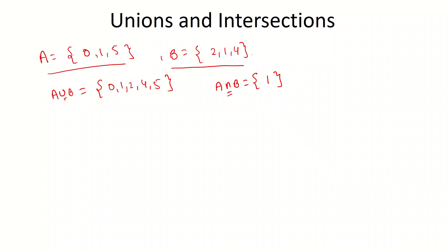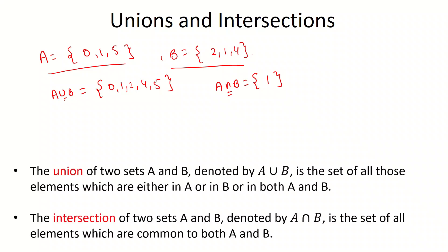Remember, for the union of two or more sets, you take all elements and write them down just once — no repetition is allowed in sets. Make sure you're not leaving out any element. For intersection of two or more sets, list only the elements common to all of those sets. Formally: the union of sets A and B is the set of all elements in either A or B or both. The intersection is the set of all elements common to both A and B.